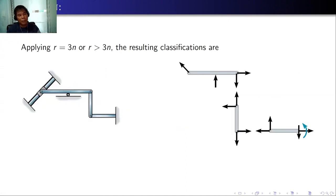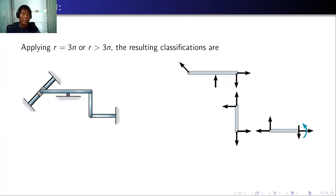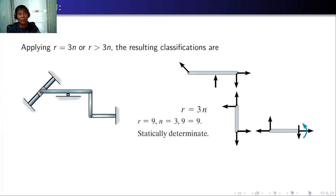For the fourth pin-connected structure: separating gives three members, n equals 3, and counting reactions gives r equals 9. Applying the equation, 9 equals 9, so this is a statically determinate structure.